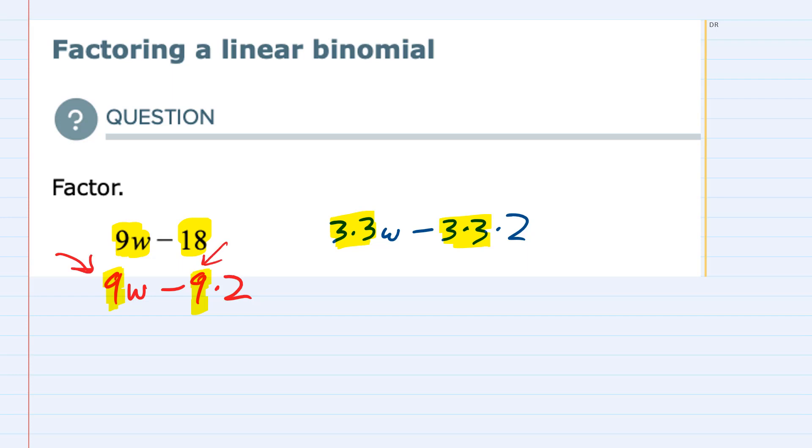Either way, since we have it written with those common factors, we can factor out anything that is in common. So our 9 and our 9, and if I factor that out, what am I left with in the first term?